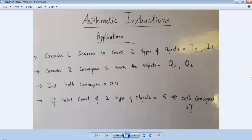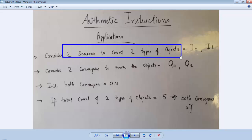I will discuss the use of arithmetic instructions with an example application. For that application we have to consider some points. We have two sensors to count two different types of objects, and the two sensors are connected on I0 and I1 physical inputs of the PLC.